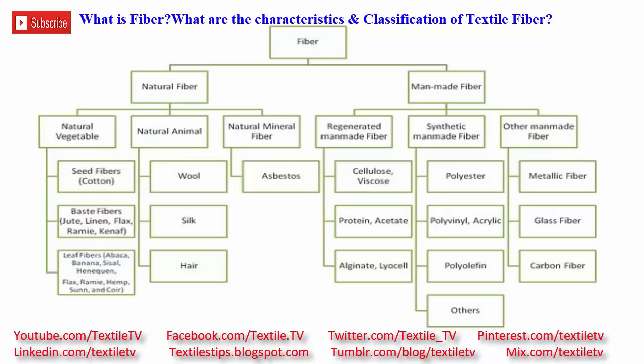Textile fibers are classified according to origin: natural fiber and man-made fiber. Natural fibers are divided into four groups: natural vegetable, natural animal, and natural mineral fiber. Natural vegetable fibers include seed fibers, bast fibers such as jute, linen, flax, and ramie, and leaf fibers such as banana and sisal. Natural animal fibers include wool, silk, and hair. Natural mineral fiber includes asbestos.